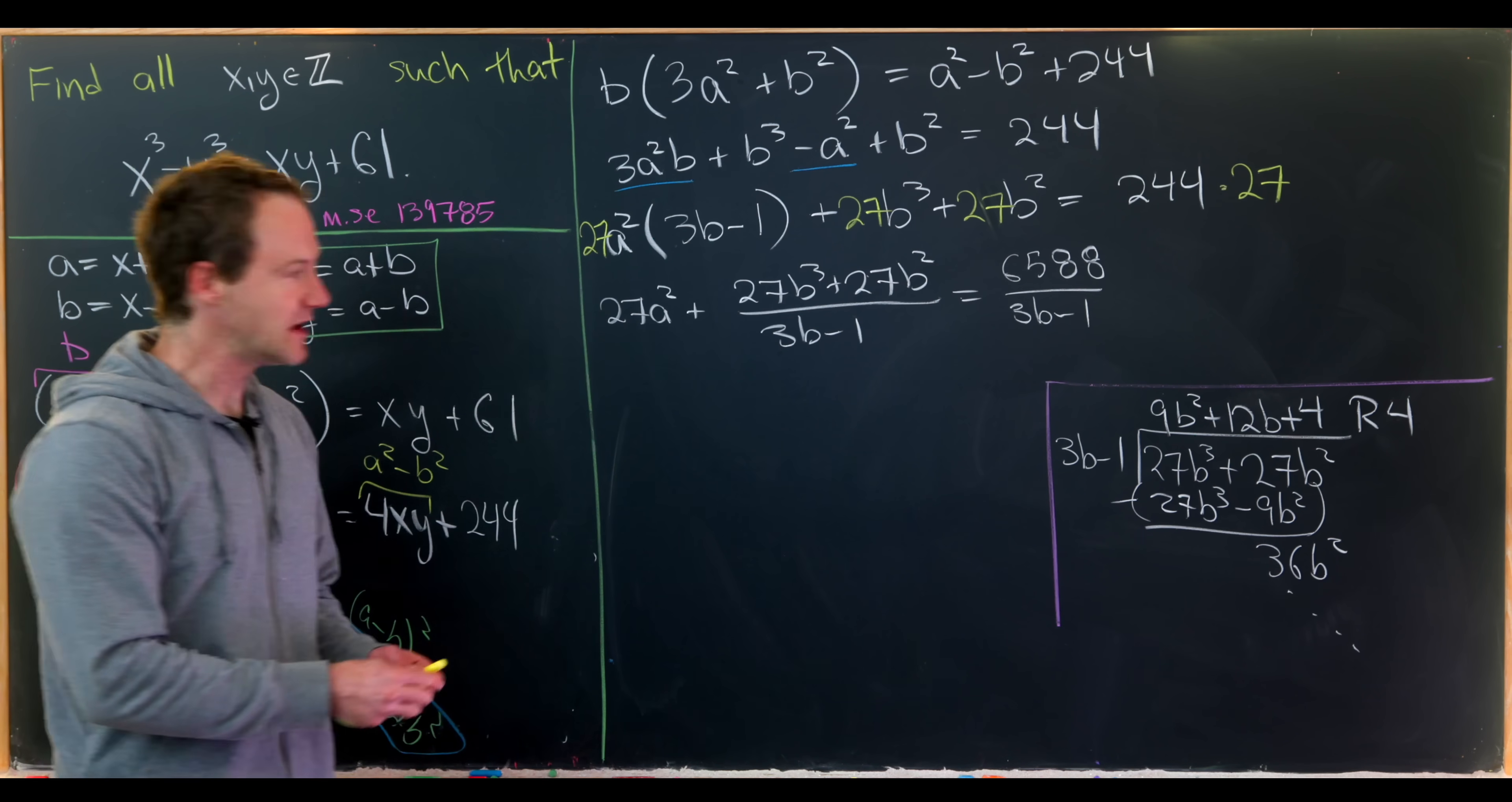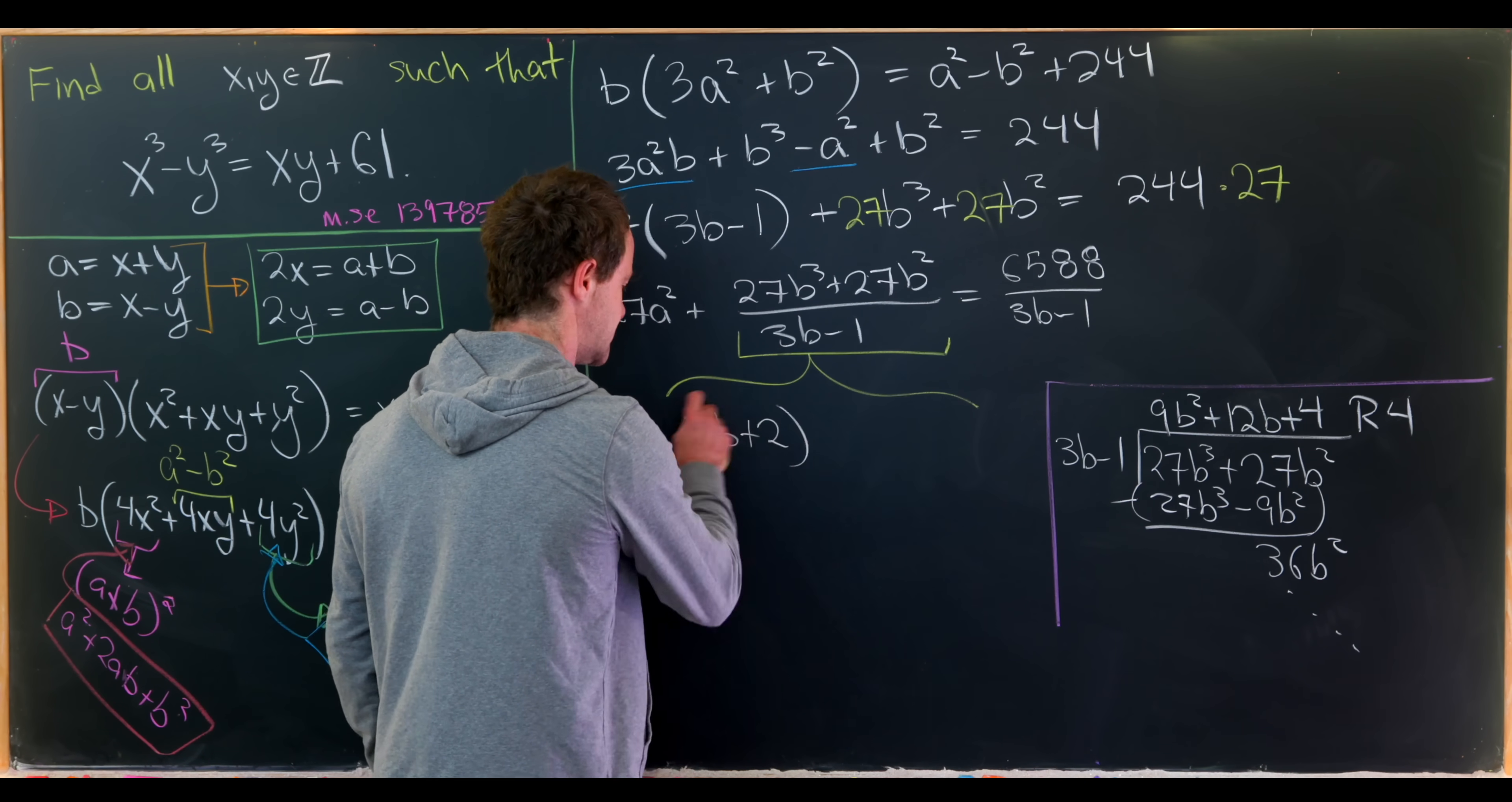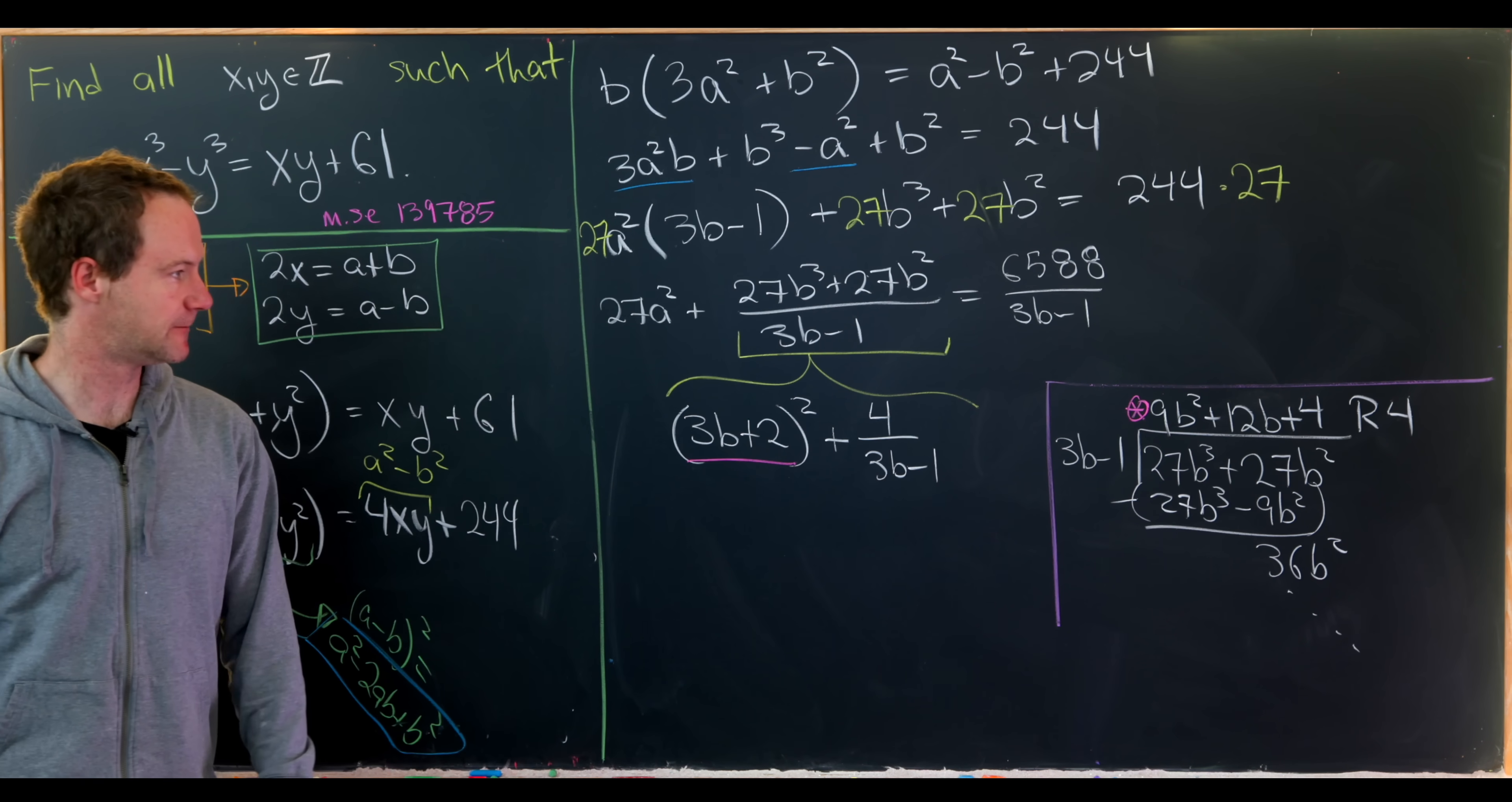What we end up with is 12b plus 4, and we get a remainder of 4. Having a remainder of 4 means we can write this object, this rational function, as the quotient which is 9b squared plus 12b plus 4, which in fact has a nice factorization of 3b plus 2 squared. And then plus the remainder over the divisor, so plus 4 over 3b minus 1.